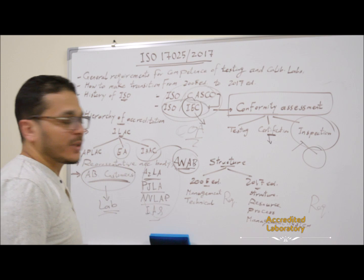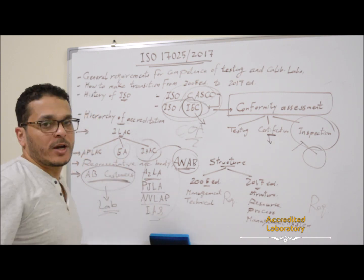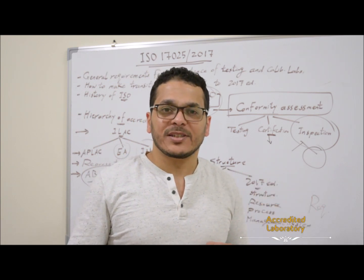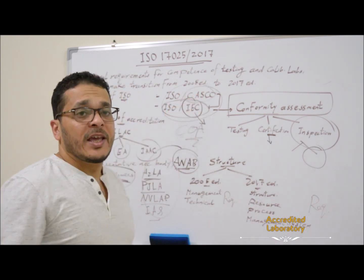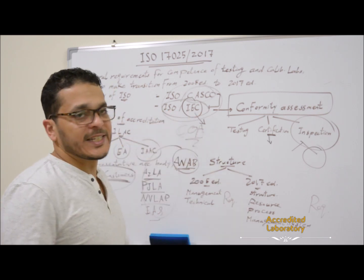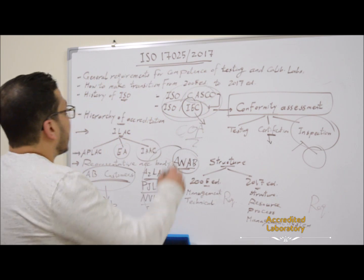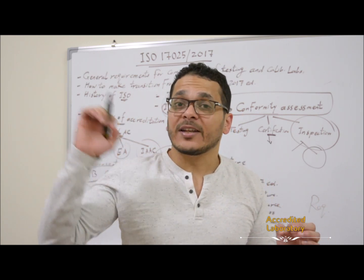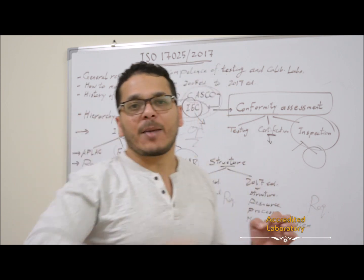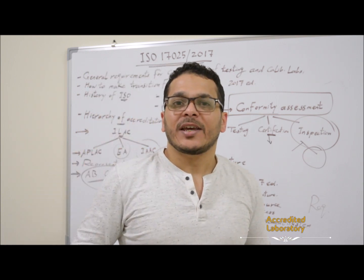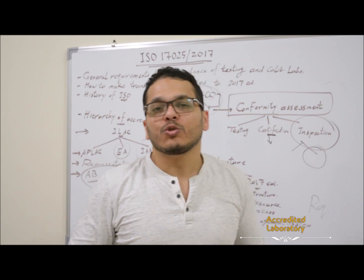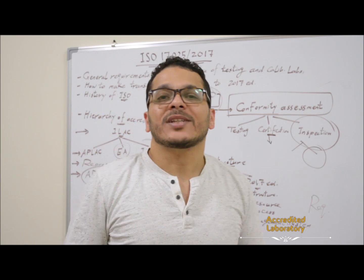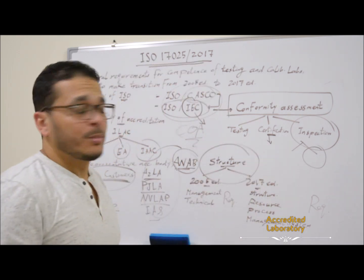Laboratories seeking accreditation will call accreditation bodies to come to the lab and ensure they meet the requirements of this document. This document was prepared by the ISO Technical Committee on conformity assessment — the CASCO group — and then circulated for voting to the national bodies of ISO and IEC, and approved by both. The third edition now cancels and replaces the previous 2005 edition, so any lab that wants to be accepted internationally has to transfer and prepare their work according to the 2017 edition.